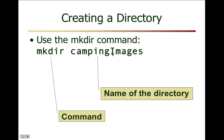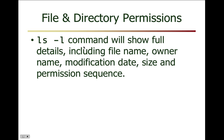To make a directory, use the mkdir command. This lecture will come in handy when doing assignments — you'll have to make a directory, copy files, copy recursively, and list out the contents, supplying the command to perform each operation. For file and directory permissions, the ls minus l command shows full details including the file name, owner name, modification date, size, and the permission sequence associated with it.